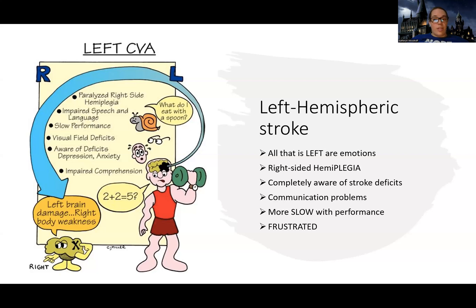Because of the communication issues they can have, they can get very frustrated. Imagine you've had a stroke and you know in your head what you want to say, but it just can't come out. These people often have expressive aphasia — where they have trouble expressing themselves. They have a lot of issues with talking or communicating, and this can lead to a lot of difficulty. Imagine knowing exactly what you want to say, but the words are there and they can't come out of your mouth.